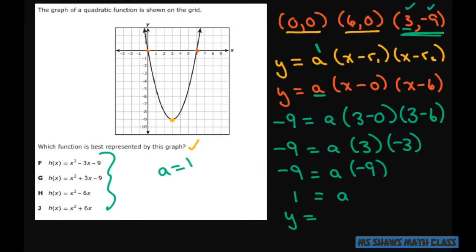Y equals 1, so that's just 1 times x minus 0 times x minus 6. And that's going to give you y equals x squared minus 6x.